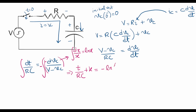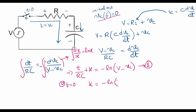Now in order to find K we need initial conditions. The initial condition is VC(0⁻) = 0, so we put t equal to 0. The left side gives K equals minus ln(V minus VC(0)), and since VC(0) is 0, the capacitor is not holding any charge, thus K equals minus ln(V).